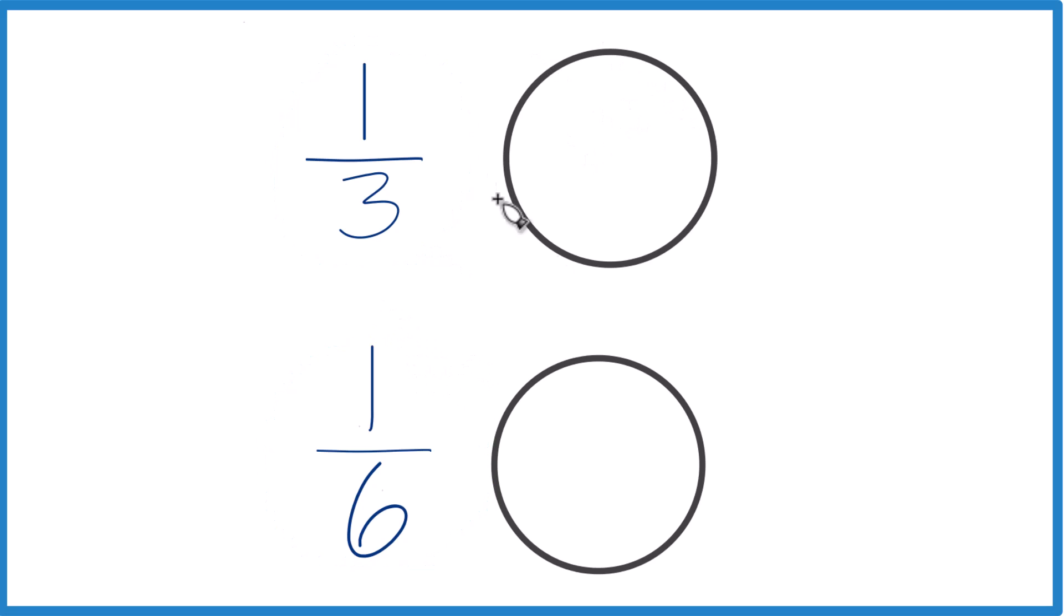One way to think about it is if you have a circle and you break that into three pieces, one, two, three pieces, each one of these pieces, that's going to be 1 third.